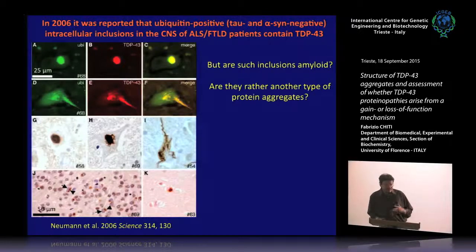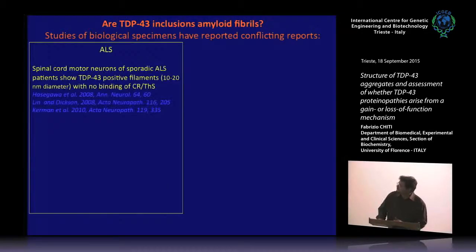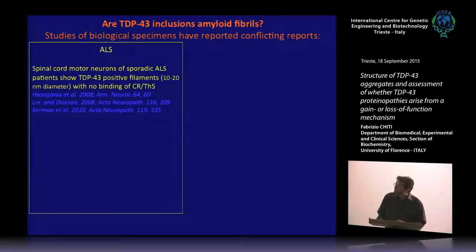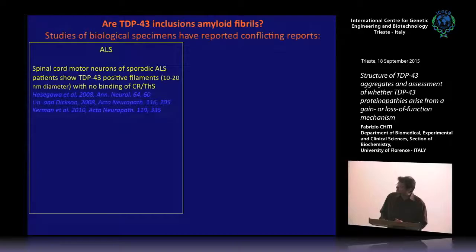The question immediately arose as to whether these inclusions are amyloid or they represent another type of protein aggregate. There are some conflicting reports in the literature, because from the analysis of biological specimens most of the studies indicate that these TDP43 aggregates are filaments with no binding of Congo red or thioflavin T, indicating that they do not contain any amyloid structure.